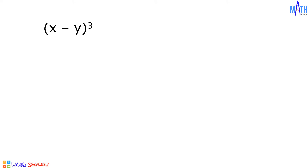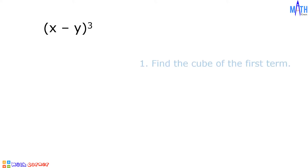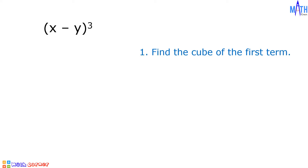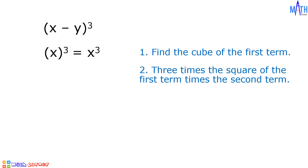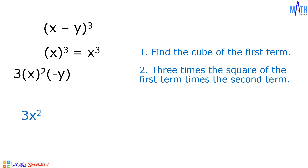Example number 2, let us find the cube of x minus y. In this binomial, the first term is x and the second term is negative y. Step number 1: cube of x is equal to x cubed. Step number 2: 3 times the square of the first term times the second term. We have 3 times square of x times negative y. 3 times square of x is equal to 3x squared. Times negative y equals negative 3x squared y.